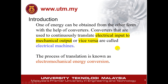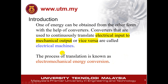So what is an electrical machine? An electrical machine is actually an energy converter that changes electrical input to mechanical output, or vice versa — meaning mechanical input and electrical output. This process is known as electromechanical energy conversion.